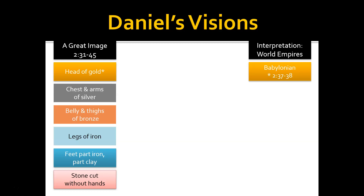Daniel tells Nebuchadnezzar: 'You are this head of gold. After you shall arise another kingdom inferior to yours, then another, a third kingdom of bronze, which shall rule over the earth. And the fourth kingdom shall be as strong as iron, as much as iron breaks in pieces and shatters everything.' These things portrayed by this image represent world empires — specifically the Babylonian. The stone cut out without hands is something God has made, not man, and is looking forward to the coming of the Messiah and the messianic kingdom that will destroy the kingdoms of this world.